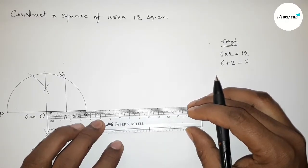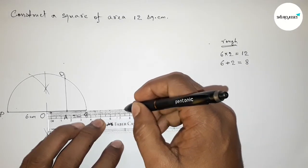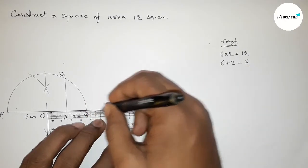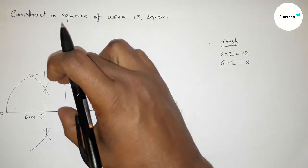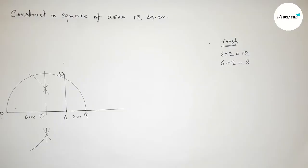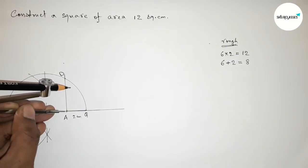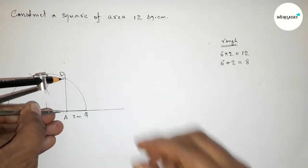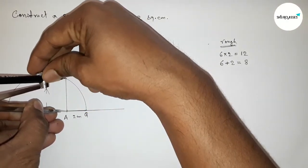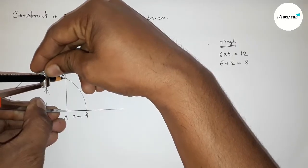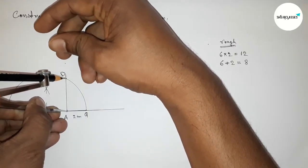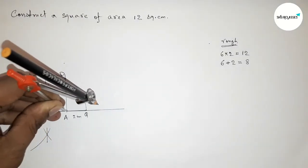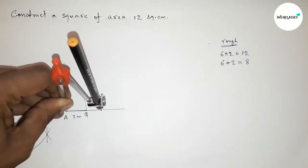Now increasing the line PQ by this way. I'm going to find the value of AD in this video. Taking the length AD with the help of a compass to draw the square.